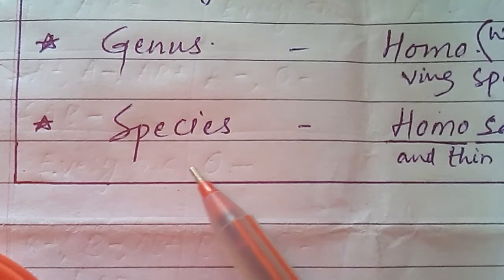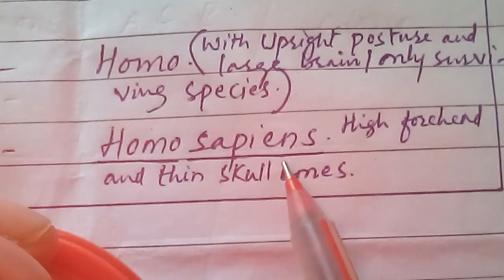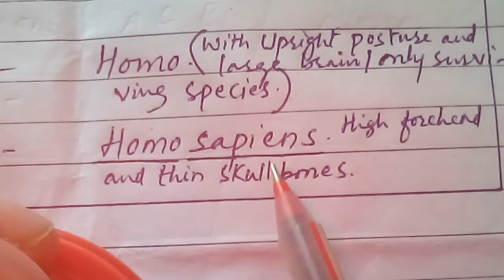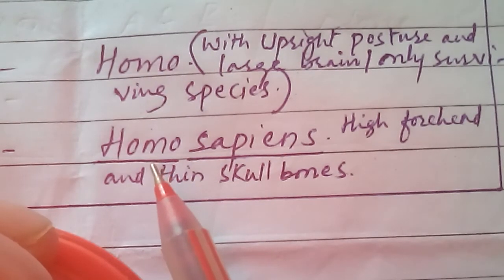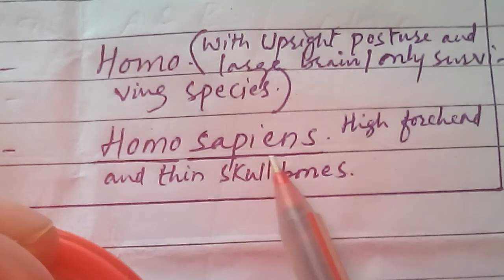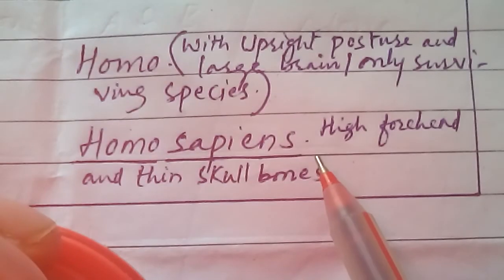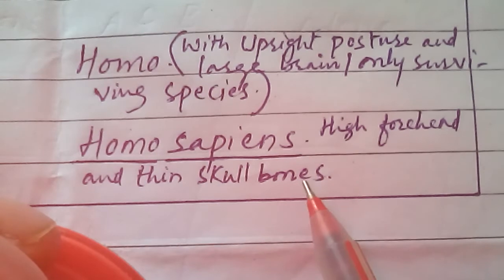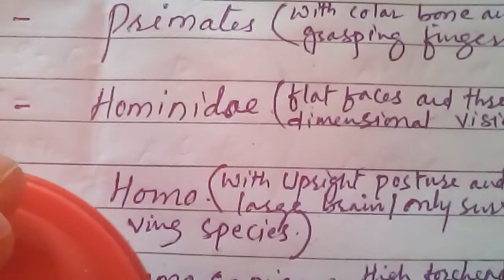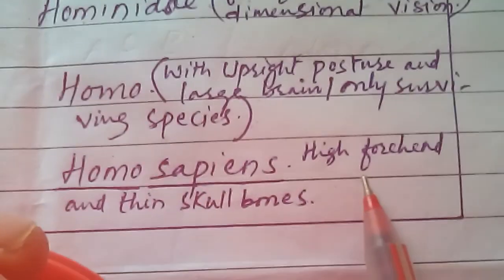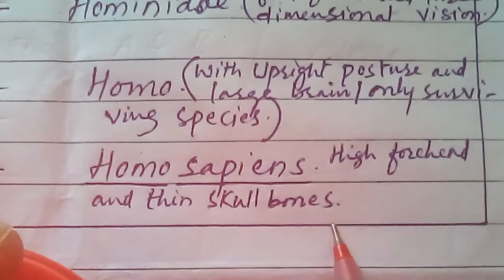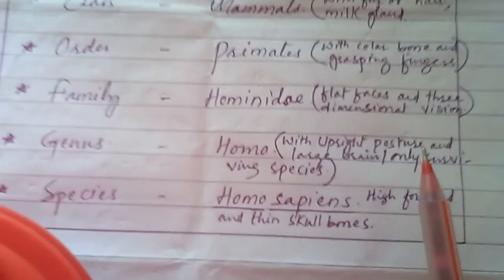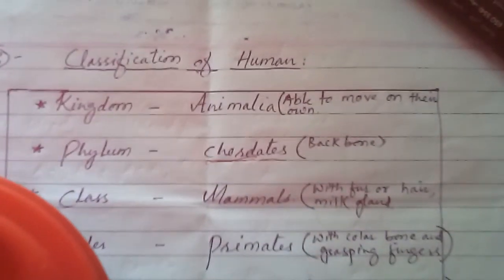The last point in the classification is species. The species of the human being is Homo sapiens — the most popular scientific name for human beings. Homo sapiens are those living organisms — those animals, those chordates, those mammals, those primates, those members of genus Homo — who have a high forehead and thin skull bone in their body. This concludes the classification of the human being.